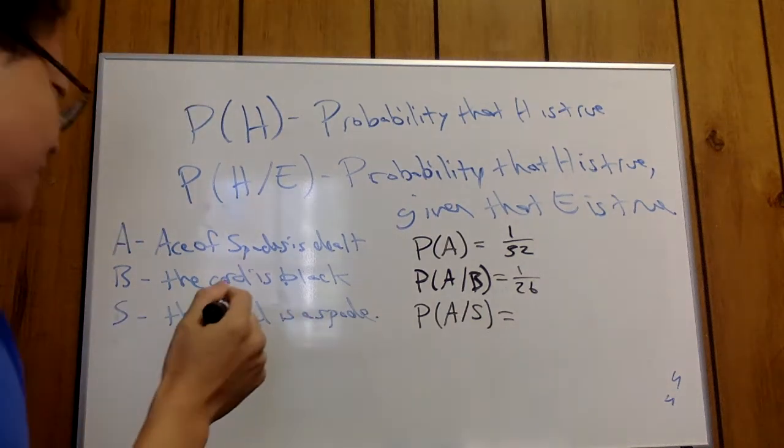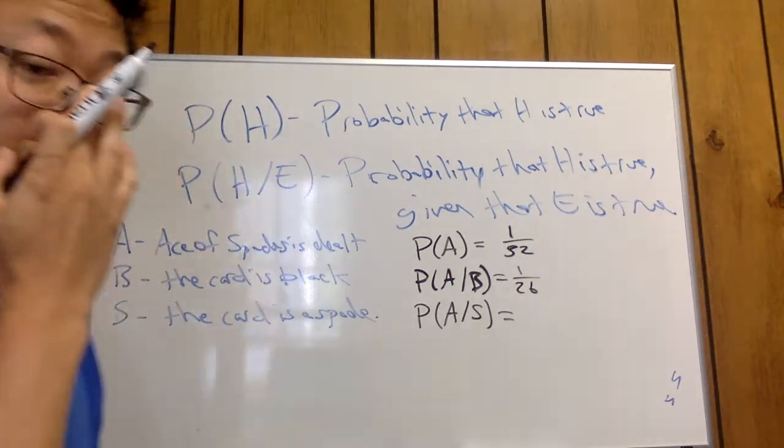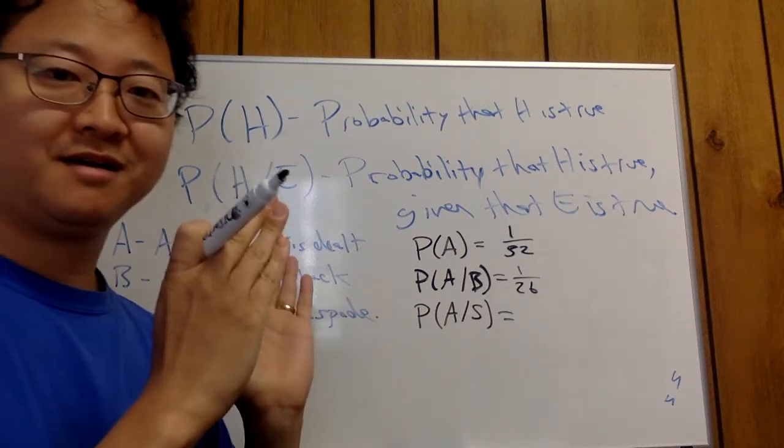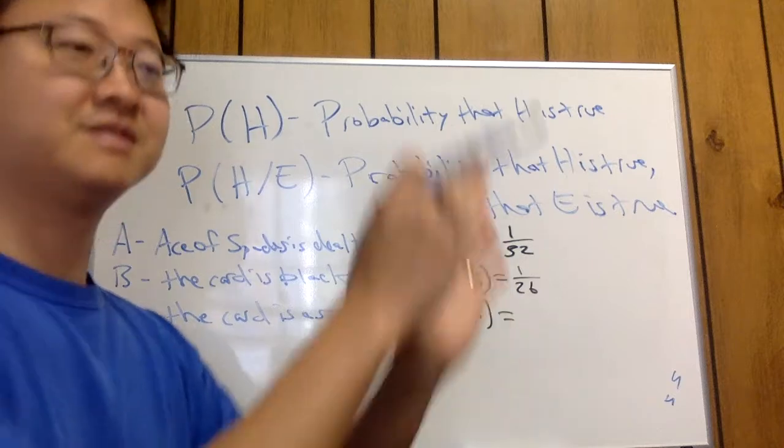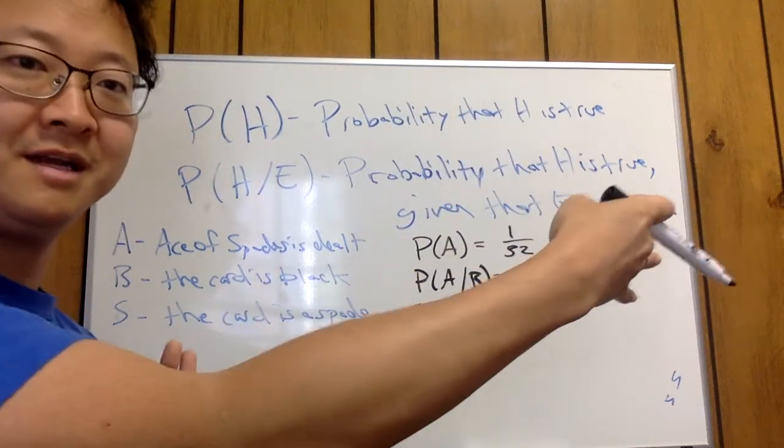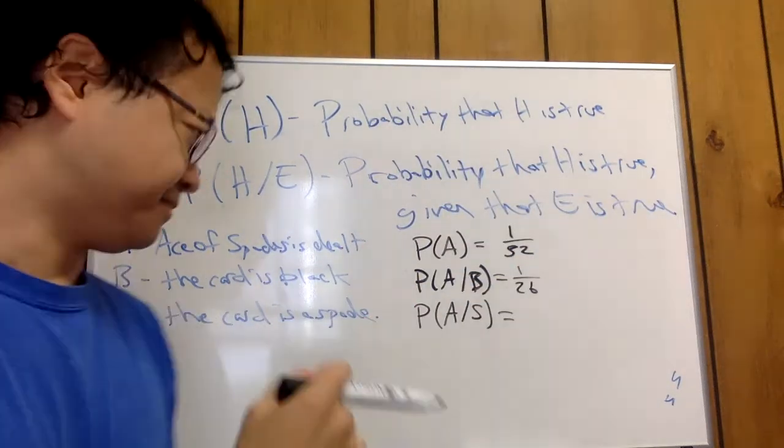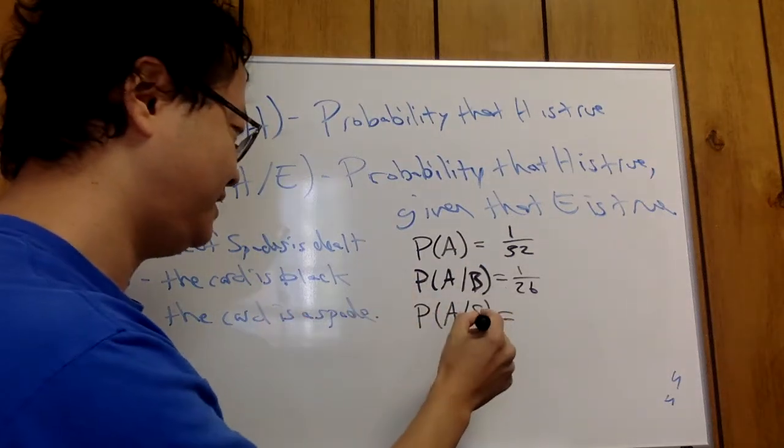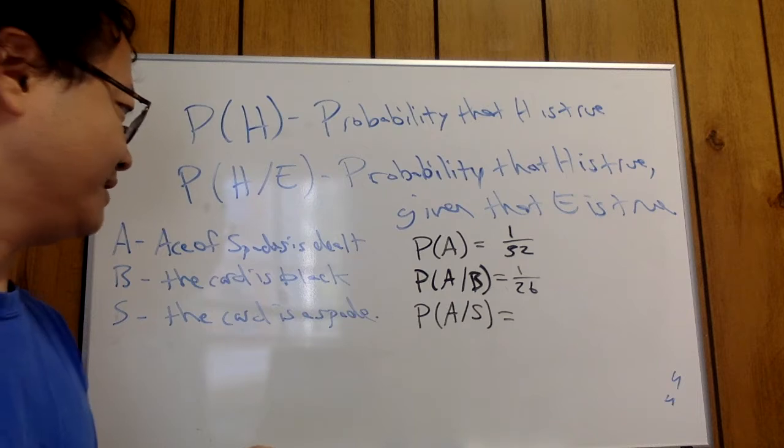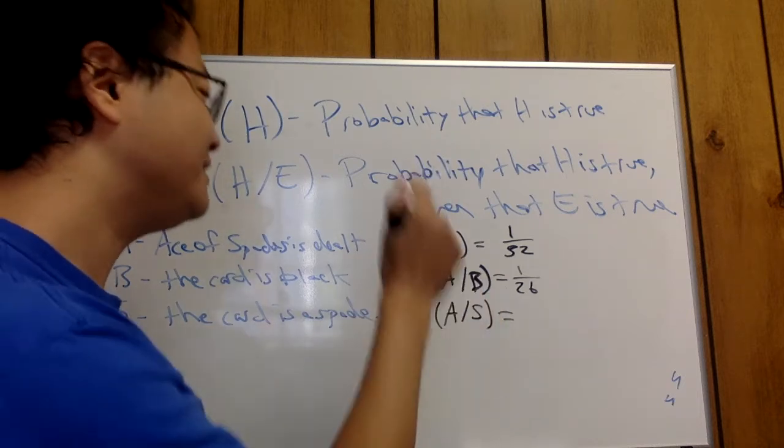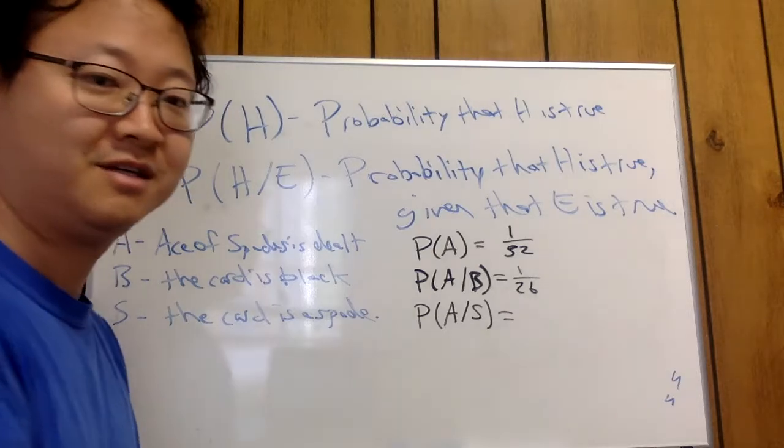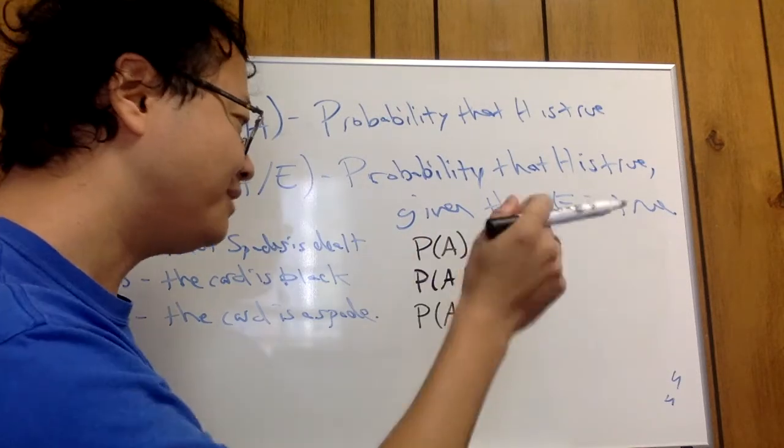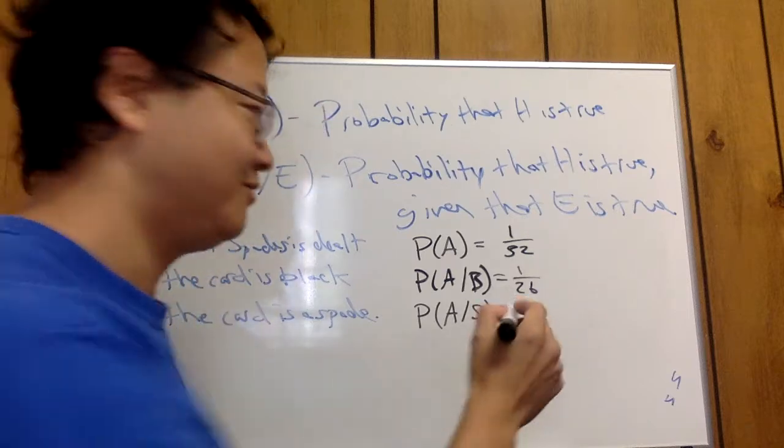Okay, what's the probability that the card is a spade? Well, we know that there are 13 spades, right? 13 clubs, 13 diamonds, 13 hearts, all adding up to 52. All right, so if you know that the card drawn is a spade, then what's the probability, given that, what's the probability that you got an ace of spades? Well, there's 13 spades, so if you pick randomly from one of those, you're going to get one out of 13.